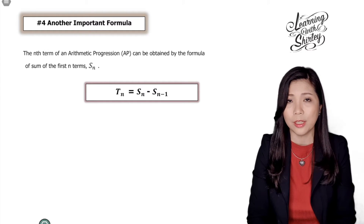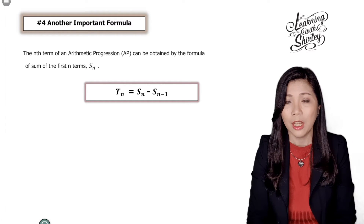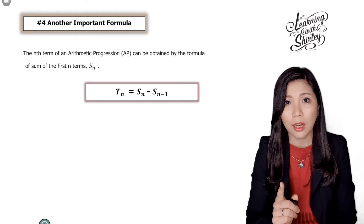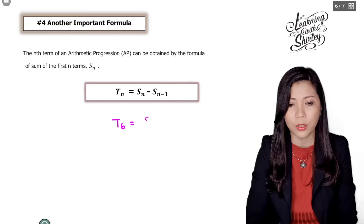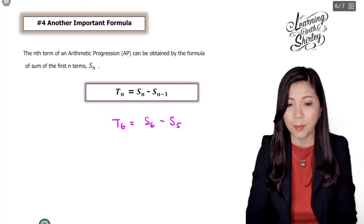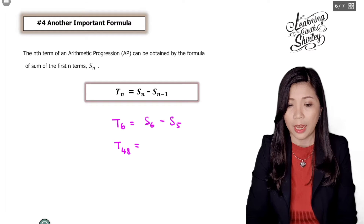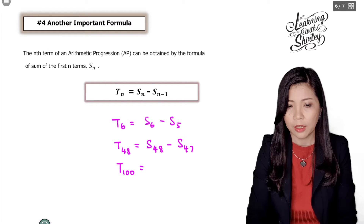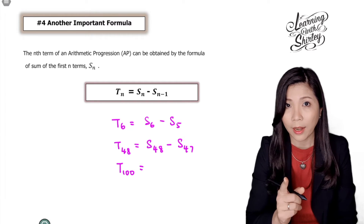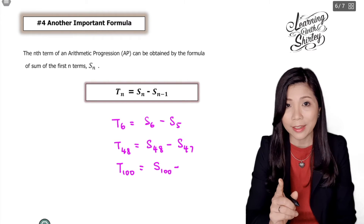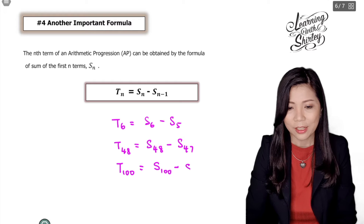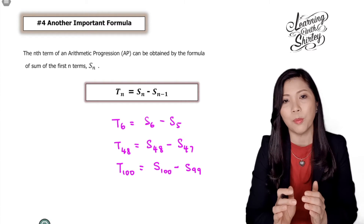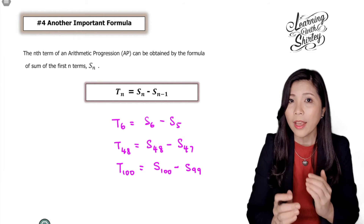There's another important formula every student must know: to find tn, we can use tn equals Sn minus Sn minus 1. For example, to find t6, we use S6 minus S5. To find t48, we use S48 minus S47. To find t100, we use S100 minus S99. Normally we use this formula for questions where Sn is given and we need to find the nth term.